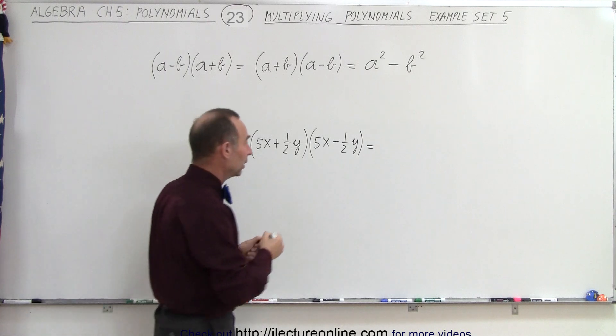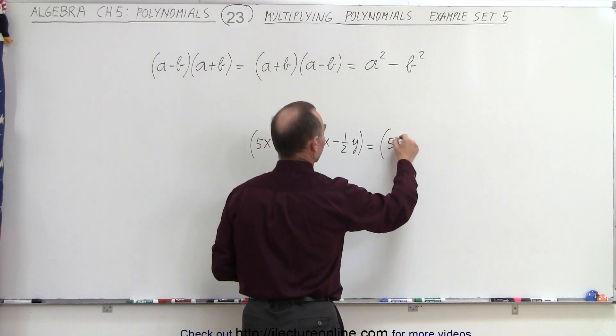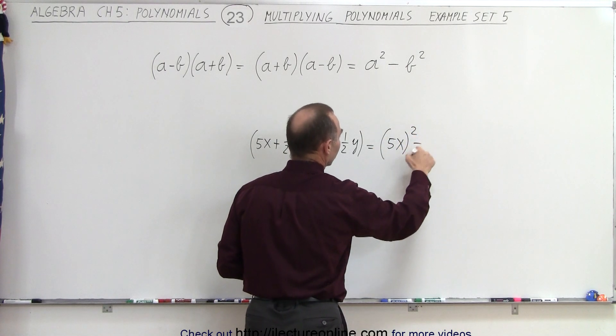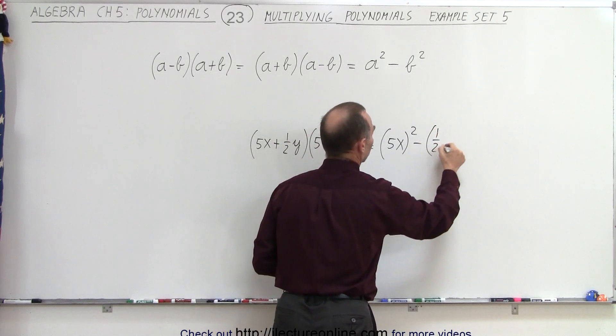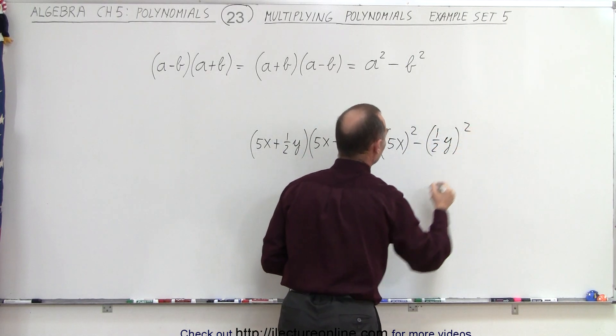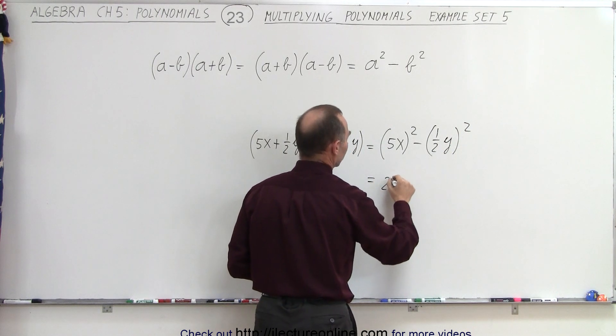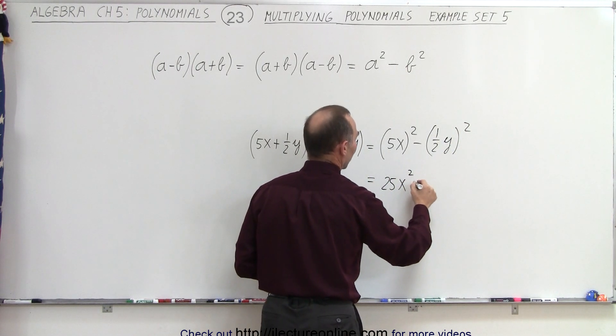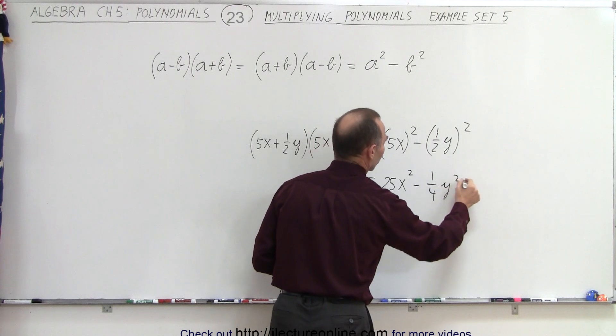So you take the first term squared minus the second term squared, like this. And so therefore, this becomes 25x squared minus one quarter y squared.